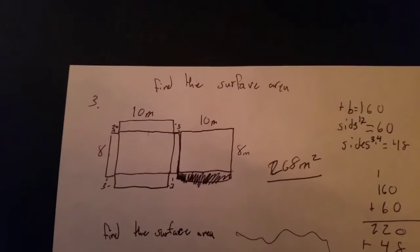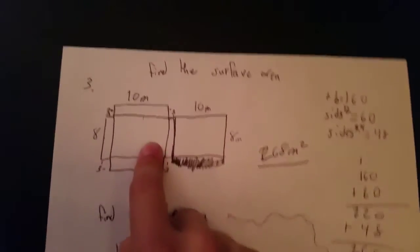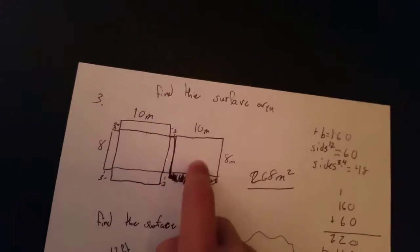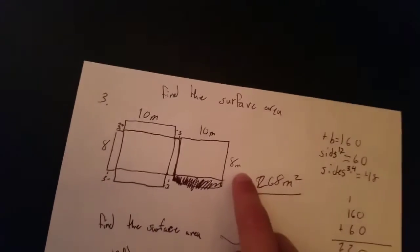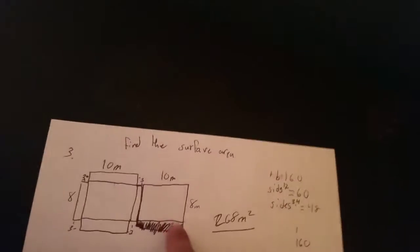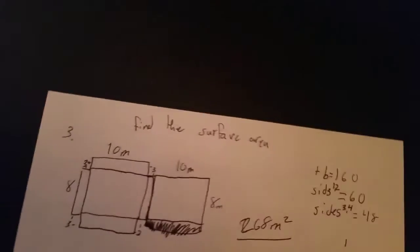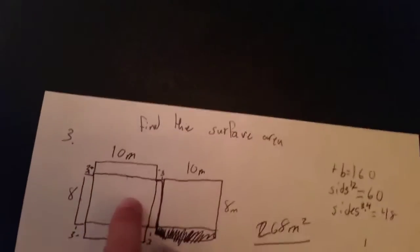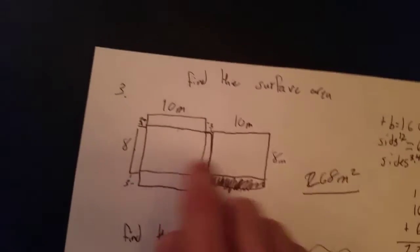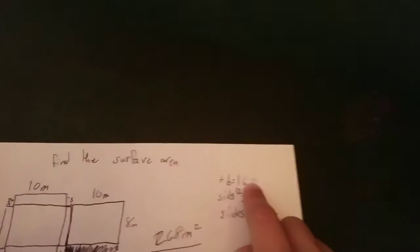So the first one says find the surface area. Right here you can see we have two rectangles that are the same. Our dimensions for one rectangle are 10 times 8. So you can do that in your head. It's 80. And you multiply that by 2 because you have two rectangles and you have 160. So the top and bottom equals 160.